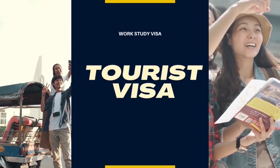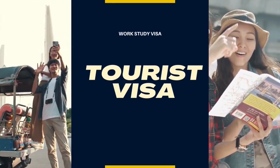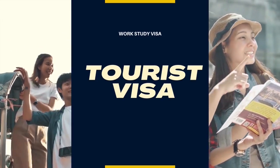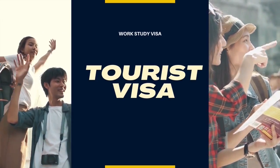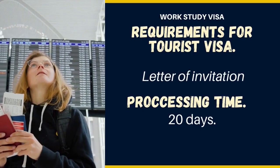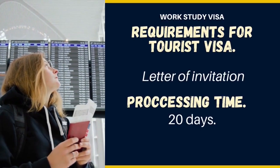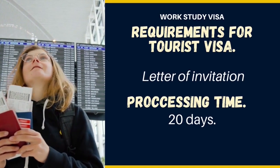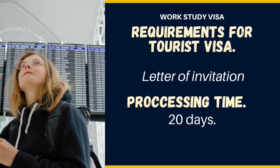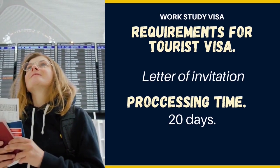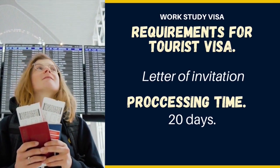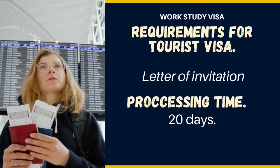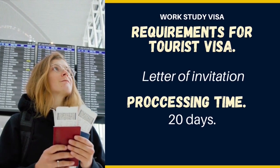If you're planning on traveling to Canada as a tourist, you will need to apply for a visitor visa. You can apply for this visa if you intend to visit Canada temporarily and you meet the eligibility requirements. The application process is fairly straightforward. In addition to providing personal documents such as your passport or travel document, you'll need a letter of invitation from someone who lives in Canada. The average processing time for a visitor visa is 20 days, but it can take as long as three months if you're from a country that requires biometrics or other special considerations.